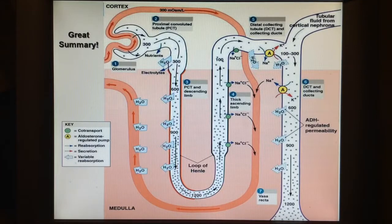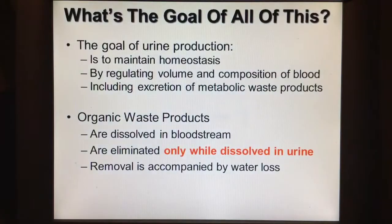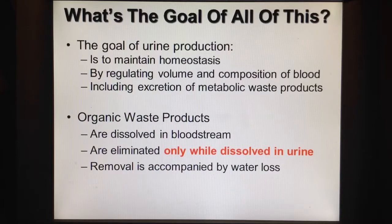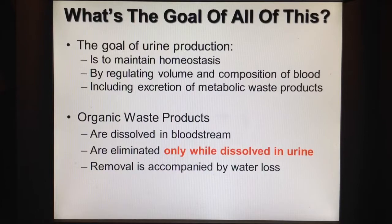Those are some of the important things to know and remember about the kidney nephron. The goal of all of it is not really to produce urine — biologically speaking, we're maintaining homeostasis by keeping things that should be in the blood in the blood, and excreting waste products like uric acid and ammonia through urine.